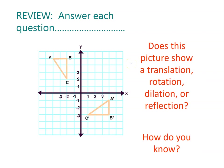So let's try to review. Does this picture show a translation, rotation, dilation, or reflection? How do you know? This one goes from here going this way — so the next one is rotation, because the value of A will rotate there, the value of B will go there, and the value of C will be here.